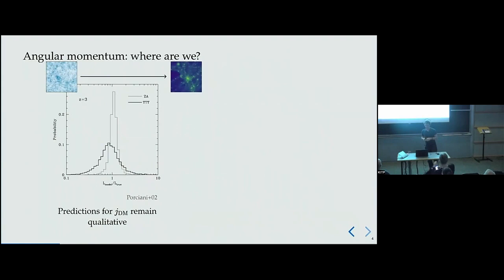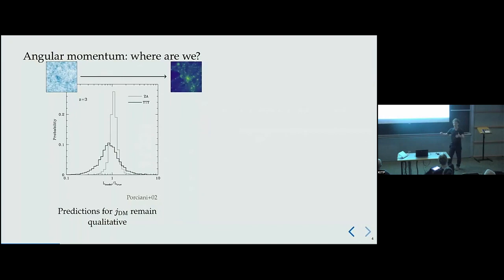Where are we in terms of angular momentum predictions? The first step is to go from initial conditions to dark matter halos. Using tidal torque theory — the standard way to predict angular momentum — you get a prediction you can compare to N-body simulations. When you measure the ratio and plot the PDF, you get a scatter of plus or minus one dex. Tidal torque theory works qualitatively to give an order of magnitude, but halo to halo there are very significant fluctuations. The question is: why?